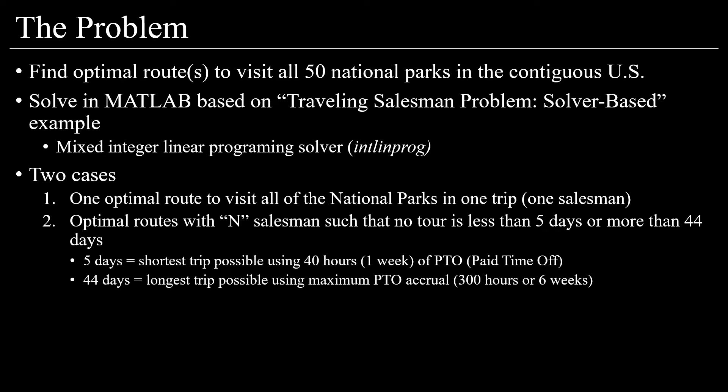The two cases I'm analyzing are: first, to find one optimal route to visit all the national parks in one trip with one salesman, and second, to find optimal routes with n number of salesmen such that no tour is less than five days or more than 44 days.